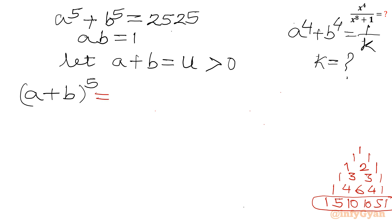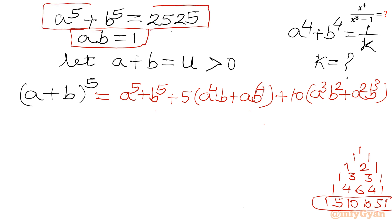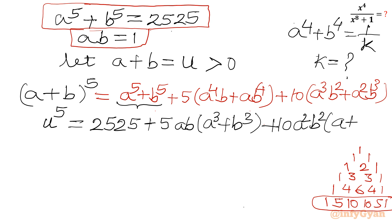Let us write this expansion. a⁵ + b⁵ — taking the first and last terms together — plus 5(a⁴b + ab⁴) plus 10(a³b² + a²b³). Now we will use ab = 1 and a⁵ + b⁵ = 2525. Writing the LHS as u⁵: u⁵ = 2525 + 5 × ab(a³ + b³) + 10 × a²b²(a + b).